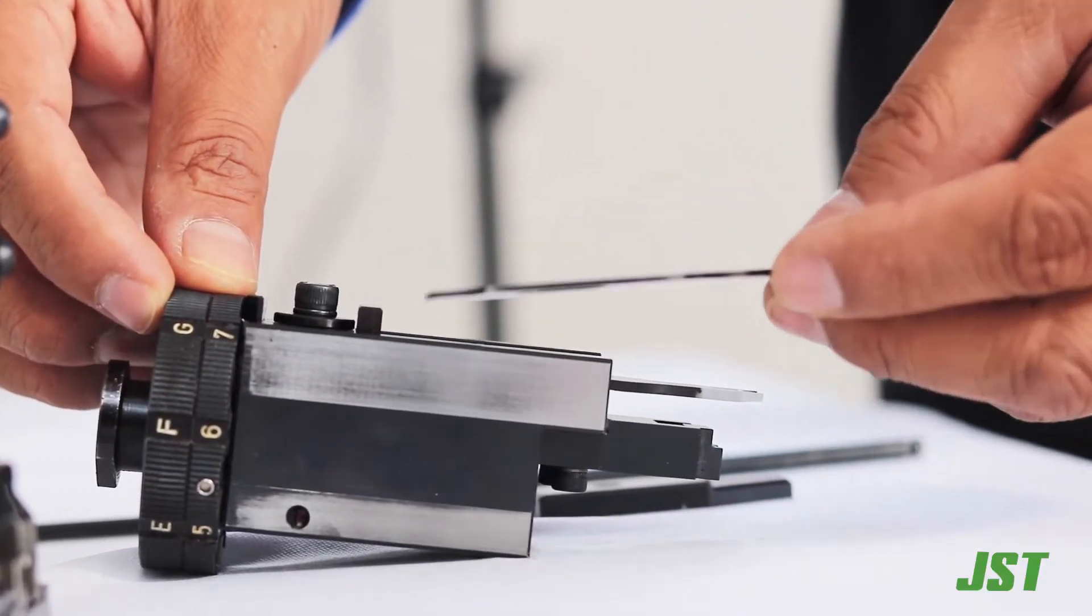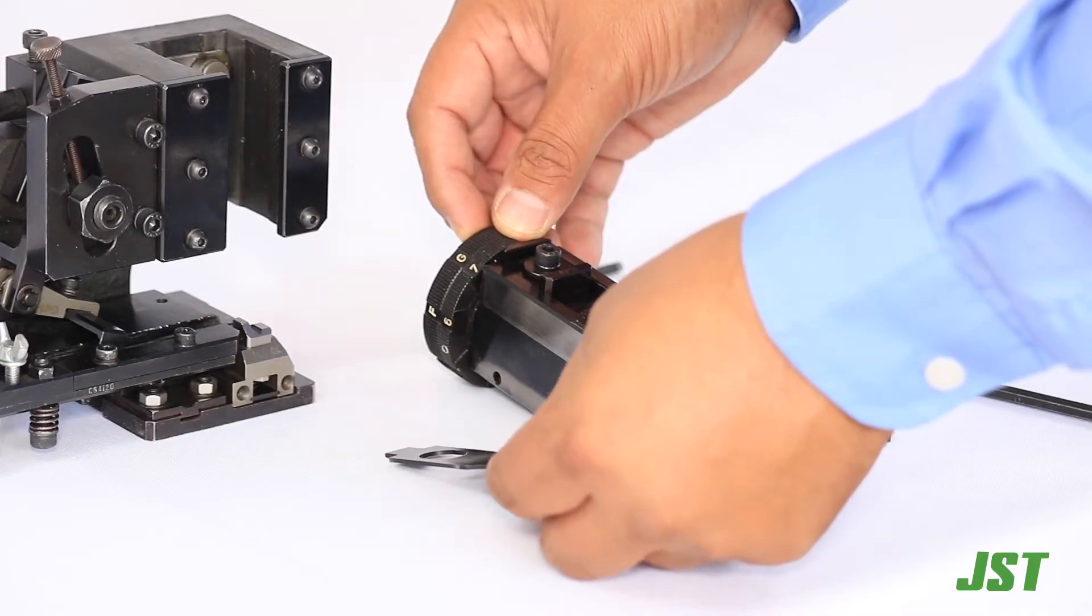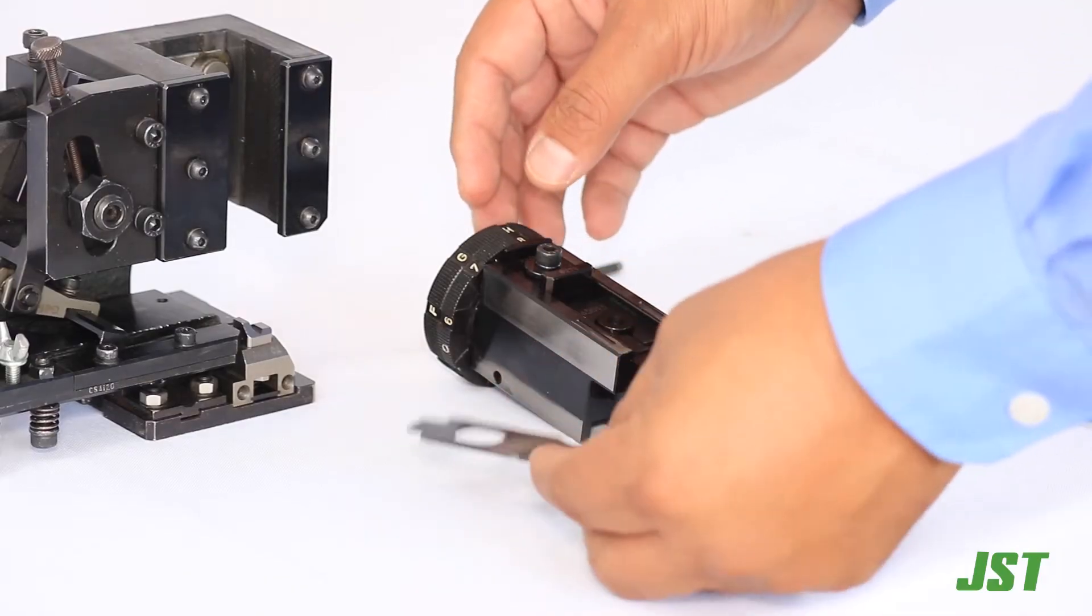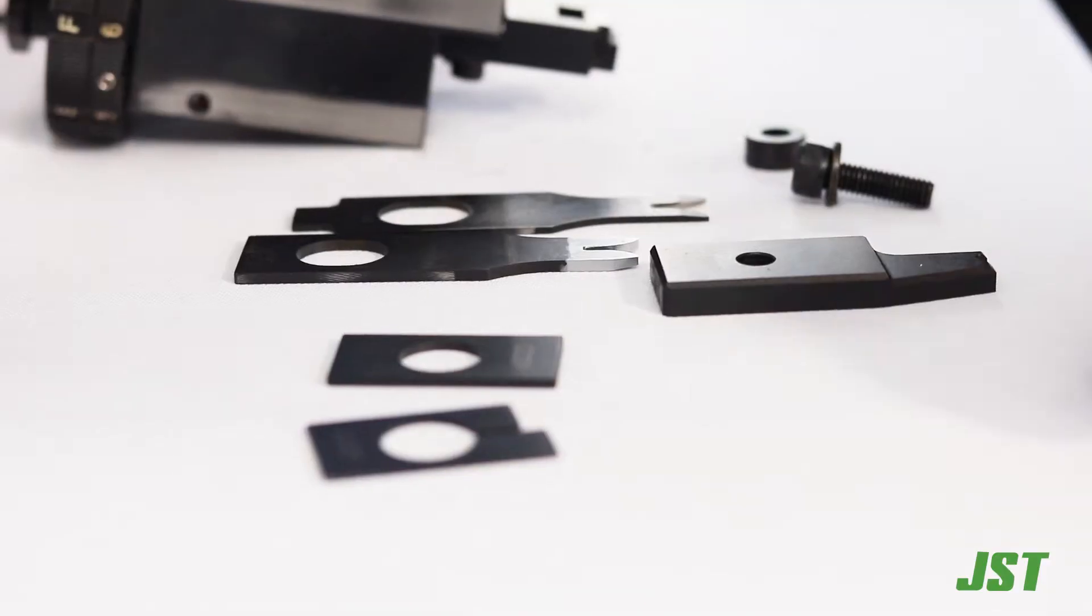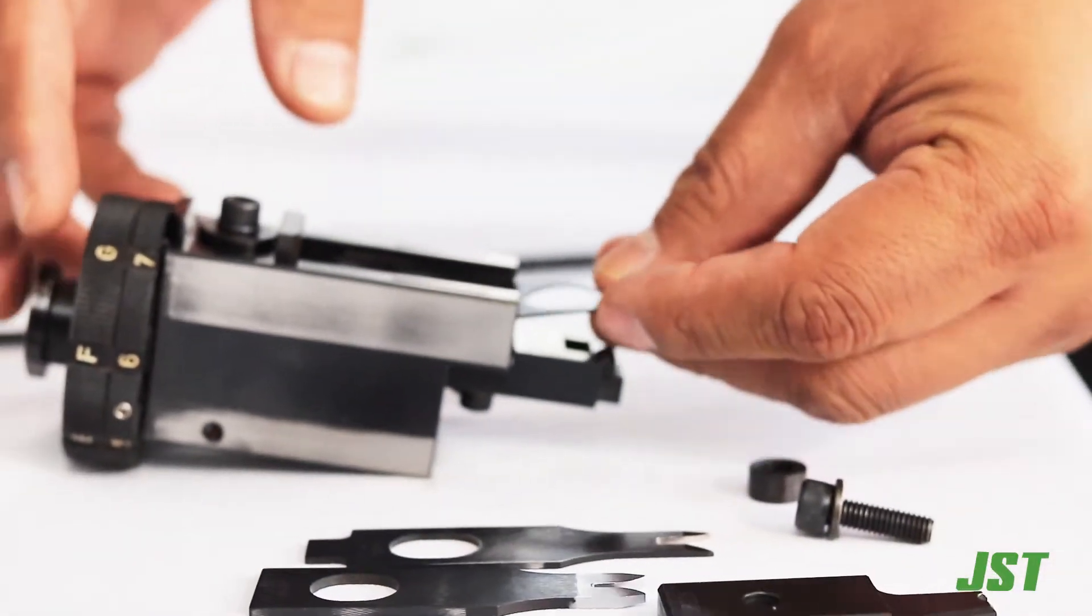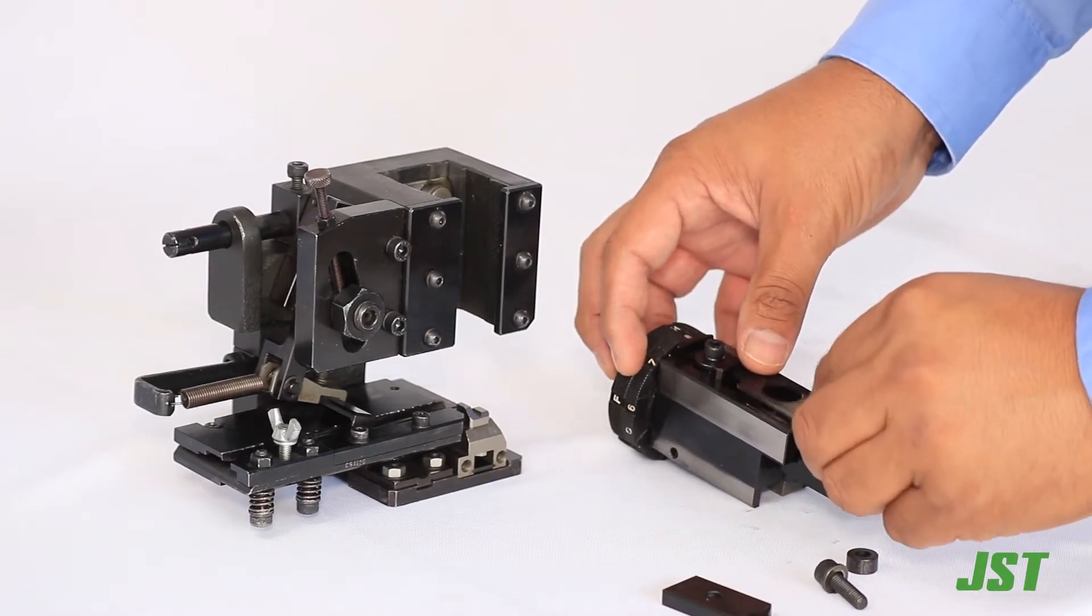Remove the damaged crimper and replace it using the applicator's blueprint as reference to ensure that the crimper being replaced is the correct part number. Reinstall the new part following the assembling sequence of a crimper and spacer as shown in the applicator's blueprint.